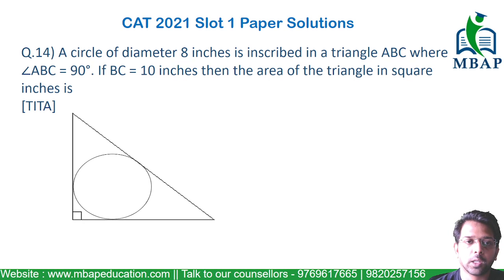Let's take the next question. The question says a circle of diameter 8 inches is inscribed in a triangle ABC, where angle ABC is equal to 90 degrees. If BC is equal to 10 inches, then the area of the triangle in square inches is equal to what? Easy question.